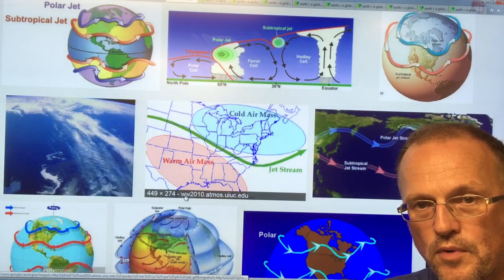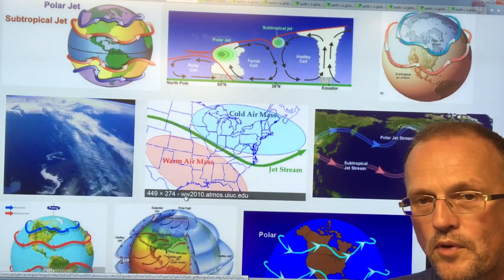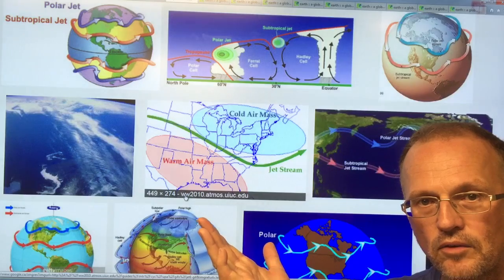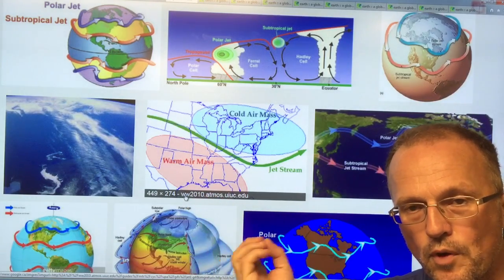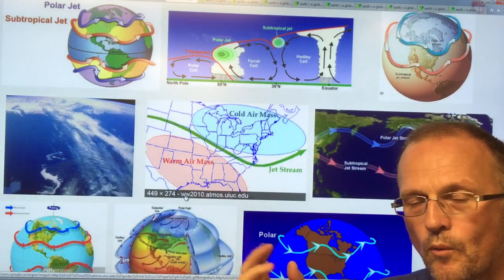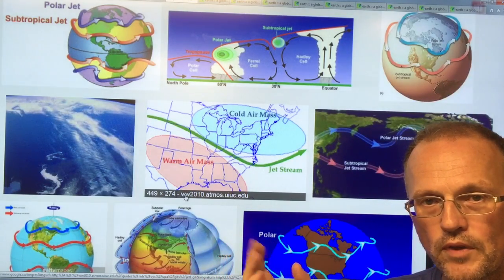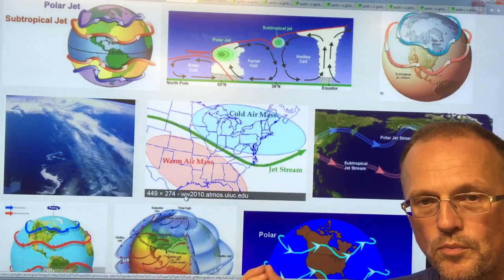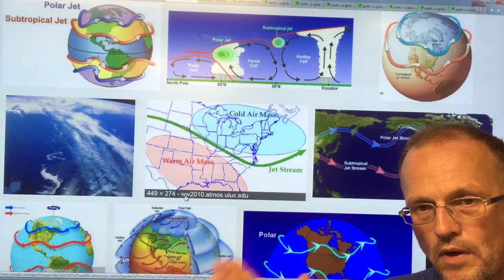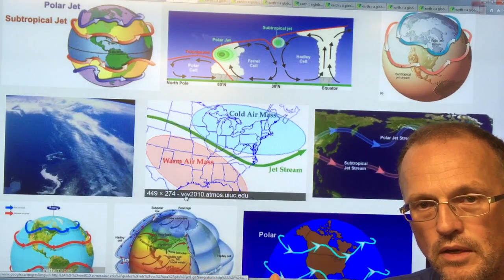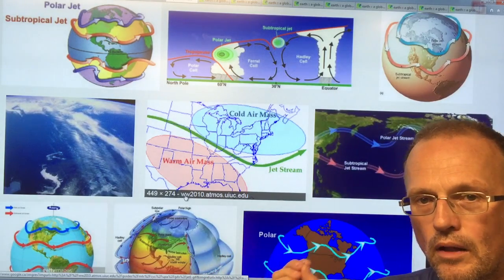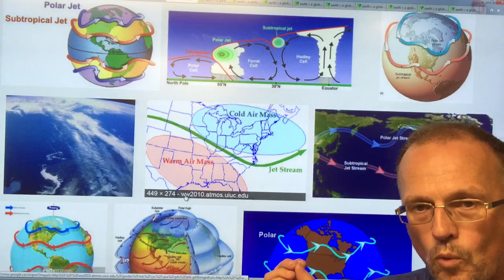For every degree temperature rise, there's seven percent more water vapour in the atmosphere. That water vapour rises up, condenses into droplets forming clouds, releasing energy which fuels these storms. We're getting storms occurring where they didn't occur before, so the distribution is changing. So we've got the frequency, the severity, the duration, and the distribution of these extreme weather events is changing.